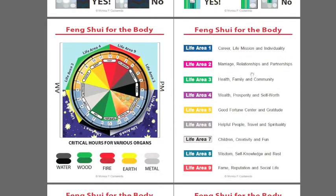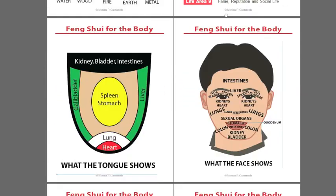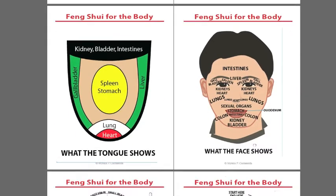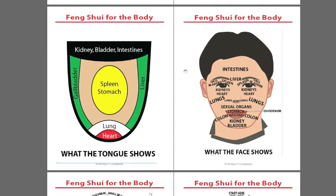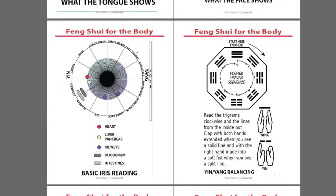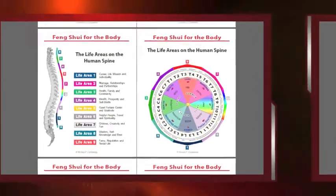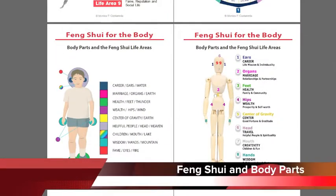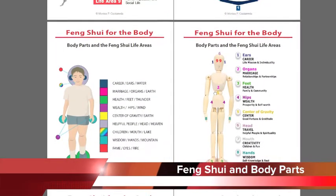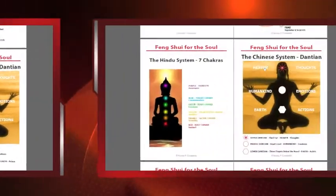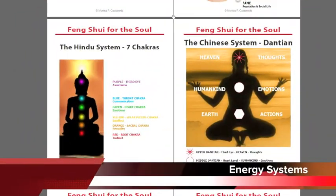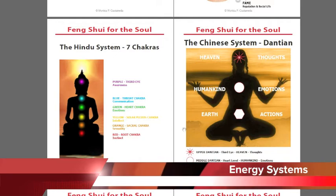This is the section on Feng Shui for the body — what life areas are related to different times of the day and night, and also the organs that go with that. There are charts used in Chinese medicine that show where conditions of different organs and systems are expressed in the tongue, on the face, and in the eye. The life areas on the human spine, Feng Shui and body parts, and how the body parts relate to the different life areas. There is also a comparison of the Hindu system that uses the seven chakras and the Dantian Chinese system that uses three major energy centers.